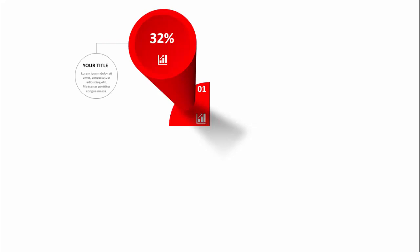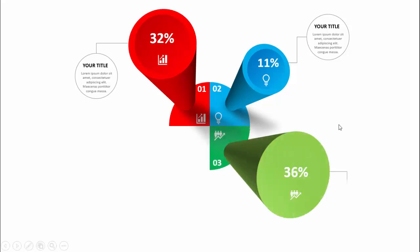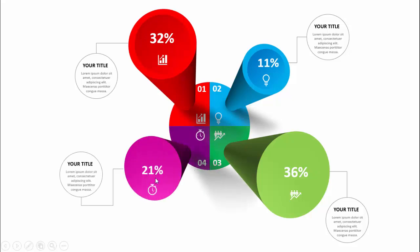Fed up with boring charts? Let me show you some interesting ways to make charts more creative and appealing. Here's my first option — I've put option one with an icon and a shadow effect. I've created a 3D cylinder shape showing 32 percent with the same icon. You can add your title and detail text. The second option is 11 percent, the third option in green is the biggest at 36 percent, and the fourth is 21 percent. You can see how we can convert simple boring charts into something like this.